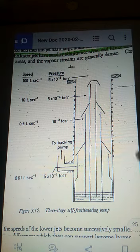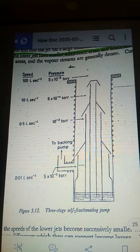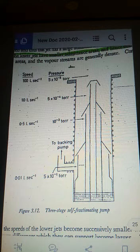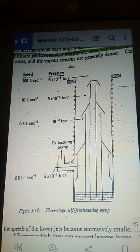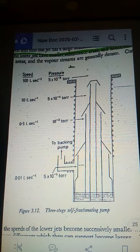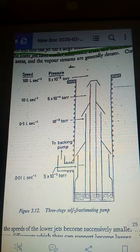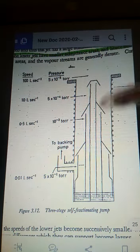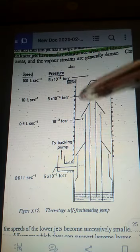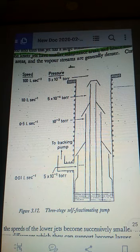The main function of this jet is to give large pumping speed and this jet has a large admittance area. On the other hand, lower jets have smaller admittance areas and smaller escape areas, and vapor streams are also denser. Consequently the speed and the pressure differences in which they operate become larger. You should notice that throughput is necessarily constant throughout the pump. That means throughput is the product of the speed and pressure of the system, which is constant throughout the pump.